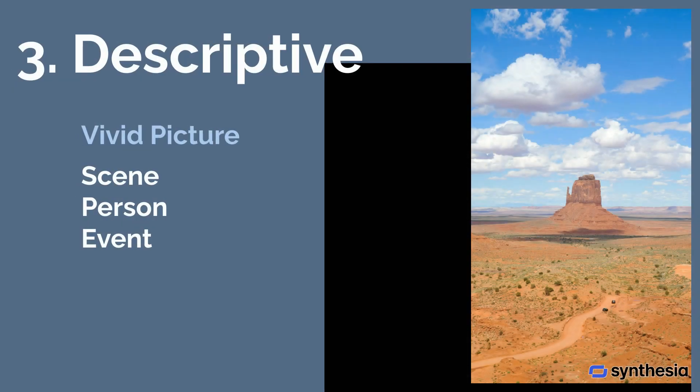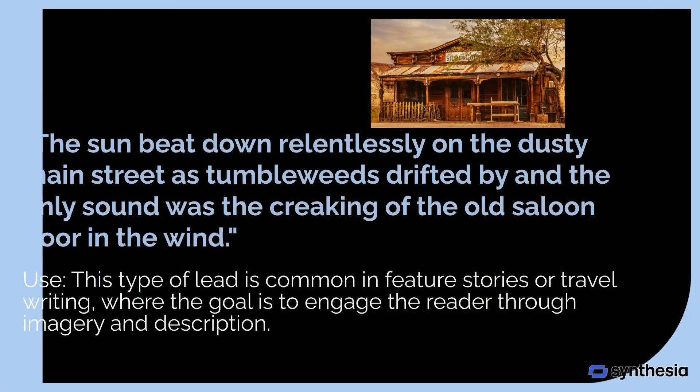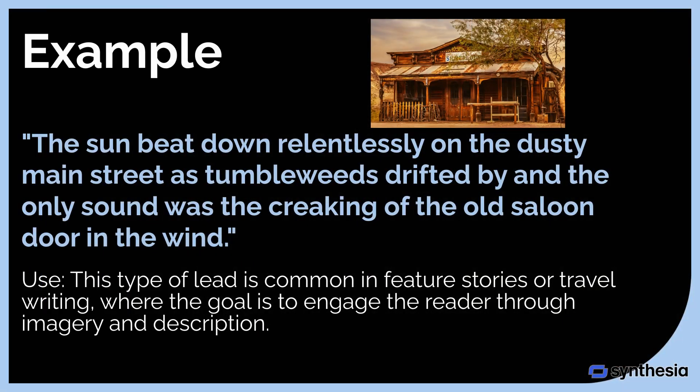3. Descriptive. A descriptive lead paints a vivid picture of a scene, person, or event. It sets the tone by immersing the reader in a detailed, sensory-rich setting, making them feel like they are part of the story. Example: The sun beat down relentlessly on the dusty main street as tumbleweeds drifted by, and the only sound was the creaking of the old saloon door in the wind. This type of lead is common in feature stories or travel writing, where the goal is to engage the reader through imagery and description.